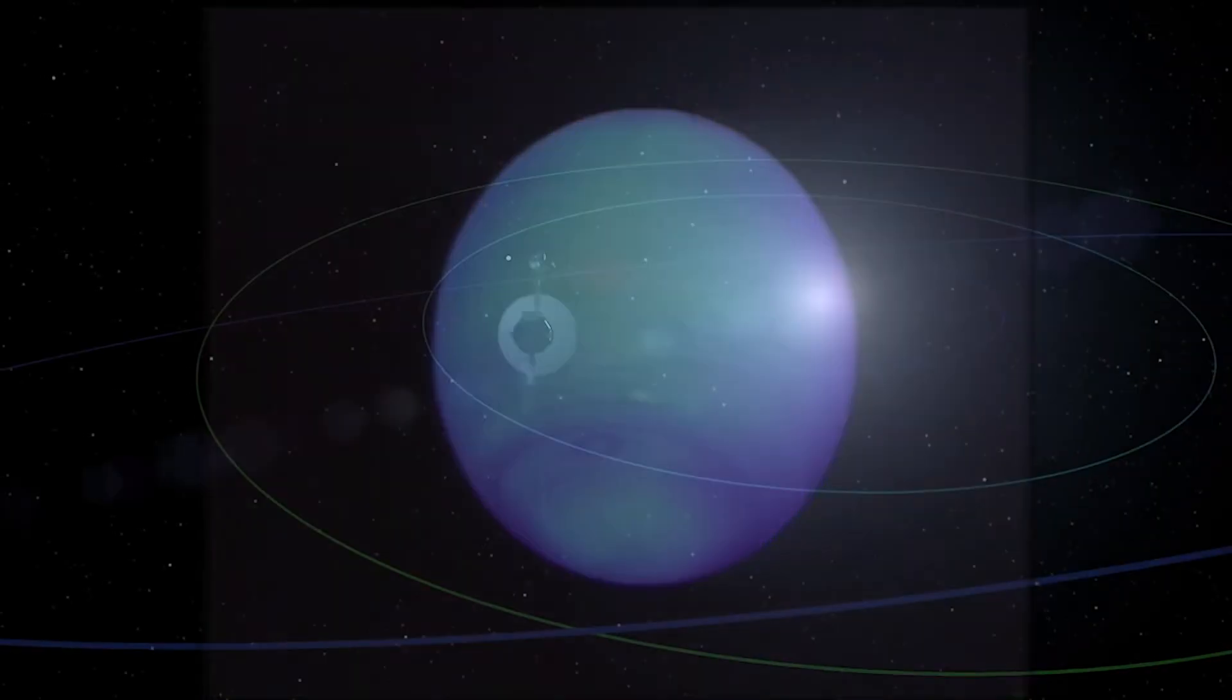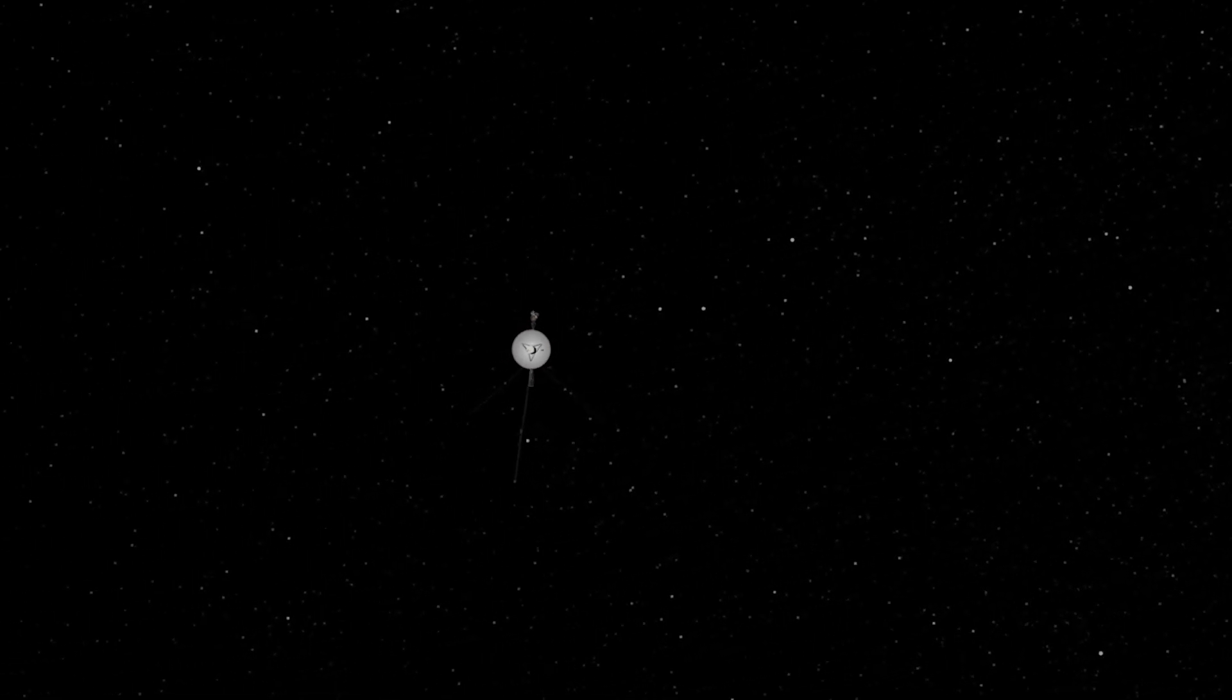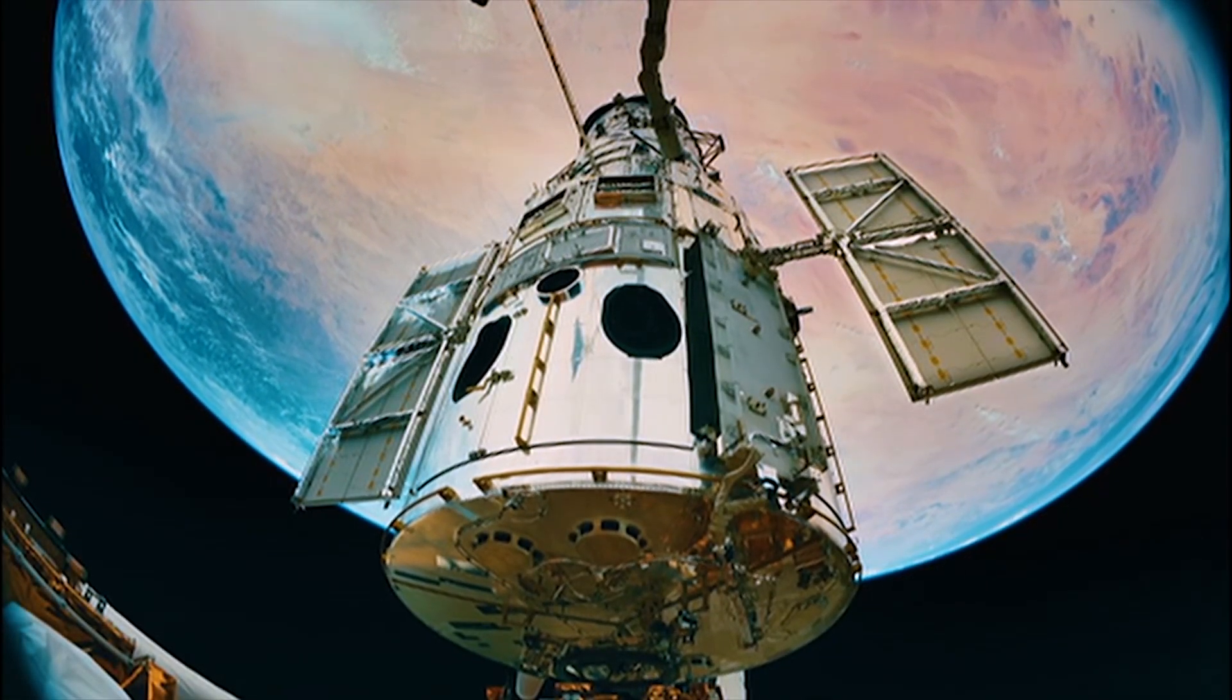Voyager 2 then headed out of the solar system and since then our primary means of watching Neptune's storms has been the Hubble Space Telescope.